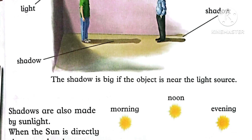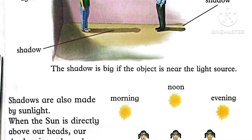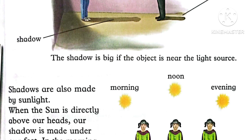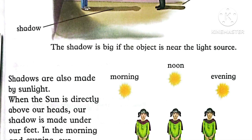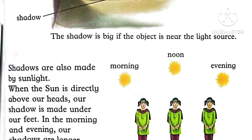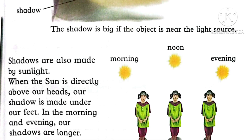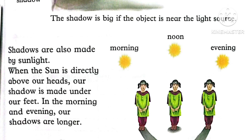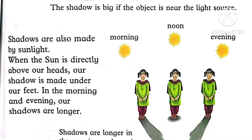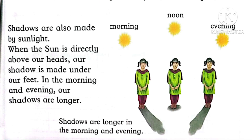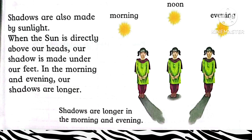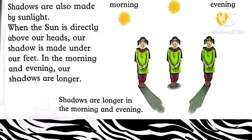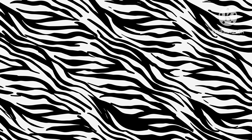Shadows are also made by sunlight. When the sun is directly above our heads, our shadow is made under our feet and is very short. In the morning and in the evening, our shadows are larger. A picture shows the shadow sizes at morning, noon, and evening time. You can also do these experiments under the supervision of any elder — when you try practically, the concepts will be clear.